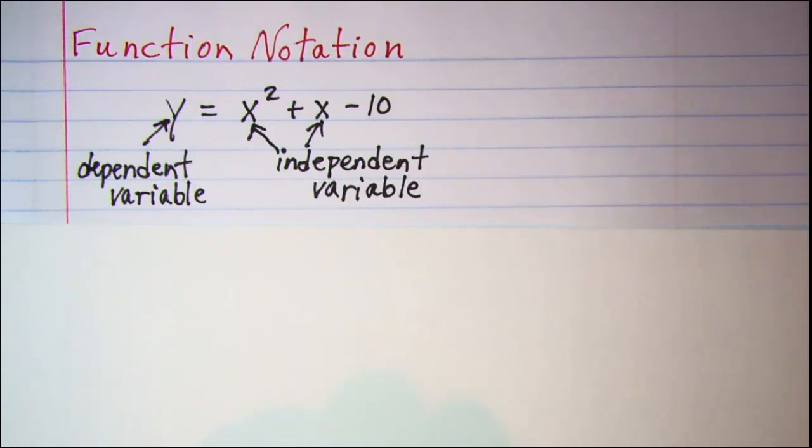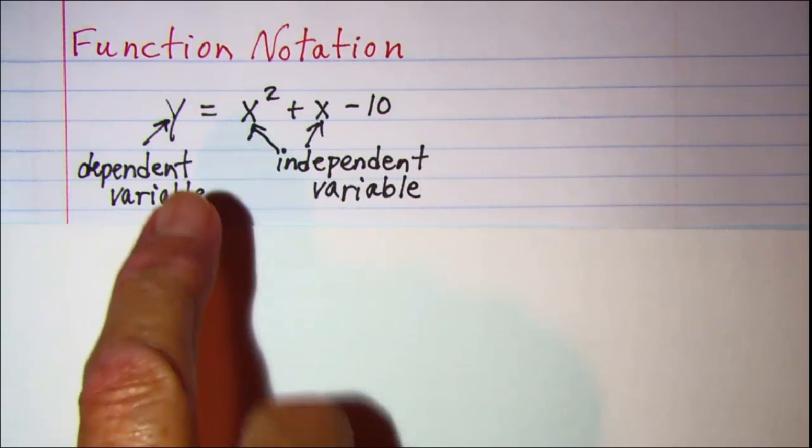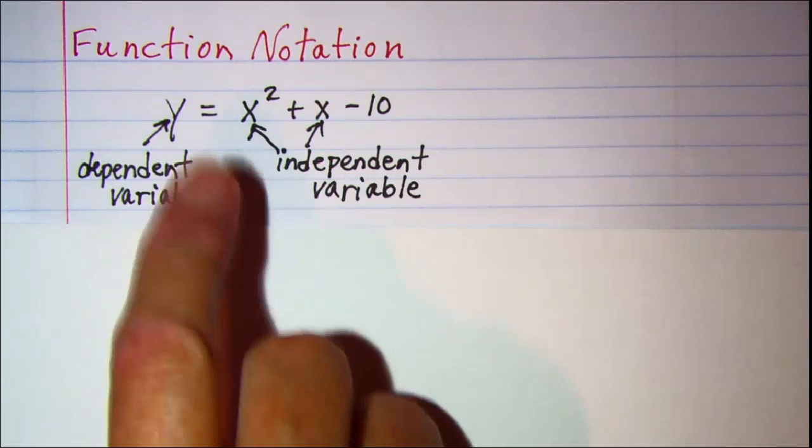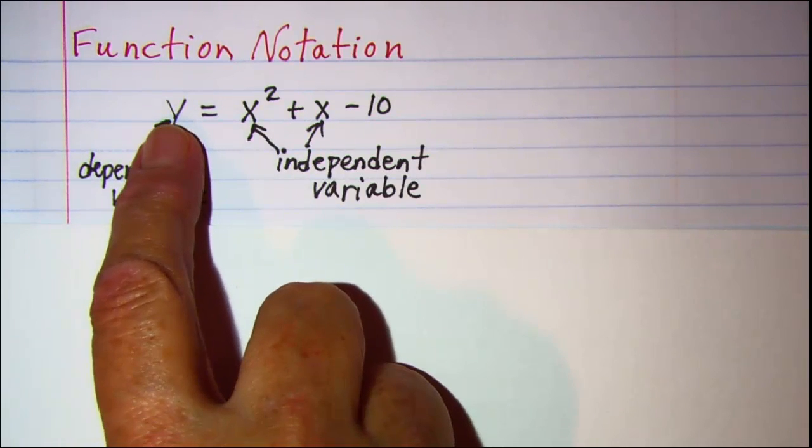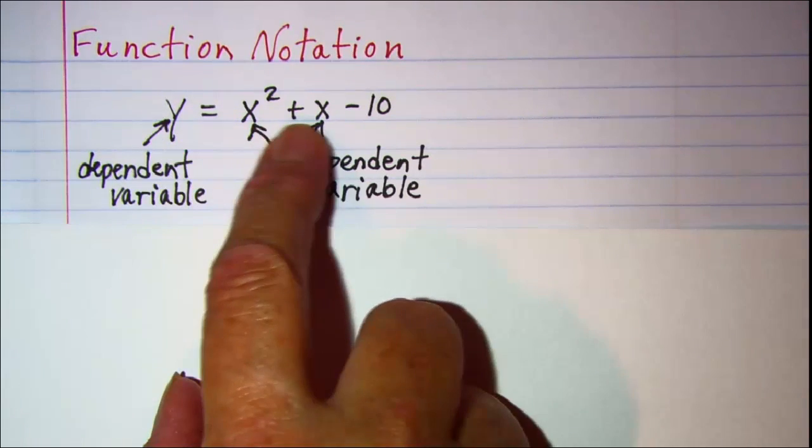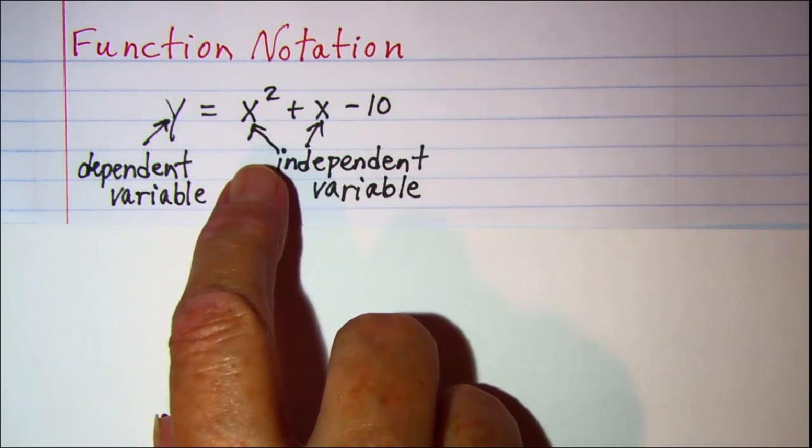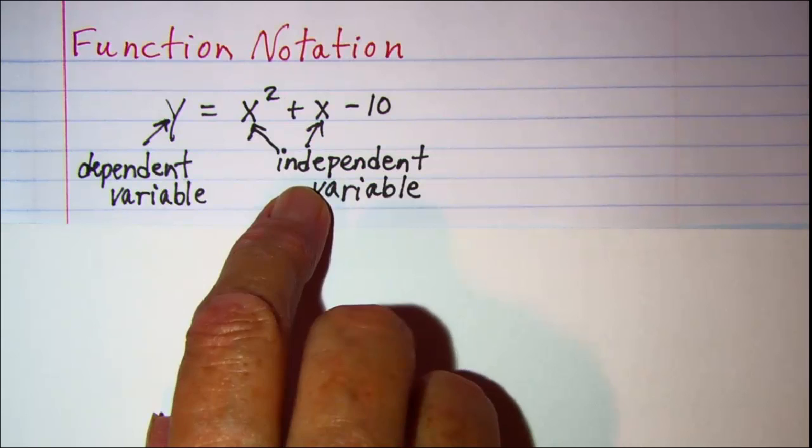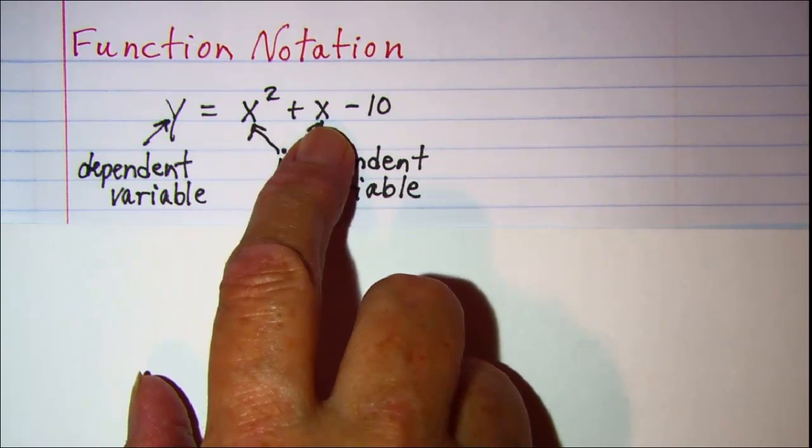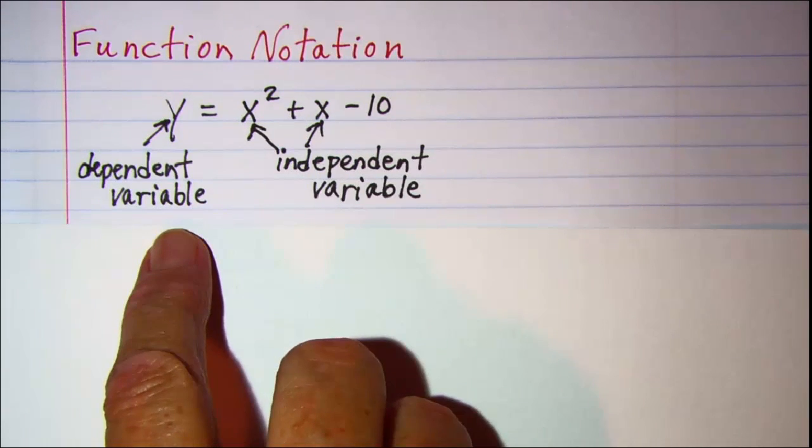In this video we'll be talking about function notation. Up until this point we've written our equations as y equals and then some expression. From this equation we know that our independent variable is x and our dependent variable is y.